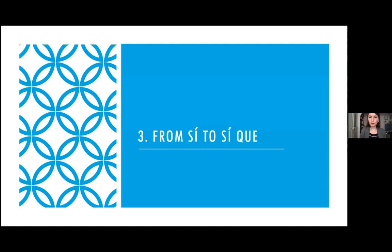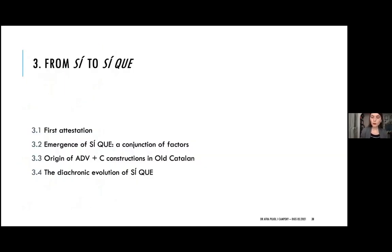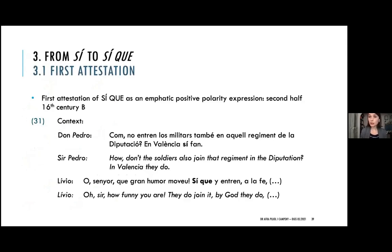How do we go from having this emphatic positive polarity particle to having modern Catalan ZIKA? Because this emphatic positive polarity particle is verb-adjacent, can be preceded by material, but has a distribution different from the ZIKA we find in modern Catalan. We don't get ZIKA until the second half of the 16th century, whereas the emphatic positive polarity particle is already attested by the end of the 12th–13th century. However, in the second half of the 16th century they coexist, as we can see in example 31 — a conversation between Don Pedro and Livio in which Don Pedro uses the emphatic positive polarity particle while Livio uses ZIKA to reverse the polarity of what Don Pedro has implied.